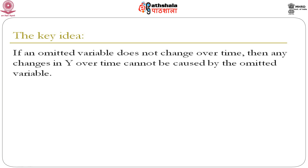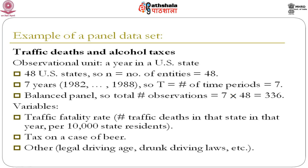Consider an example on traffic deaths and alcohol taxes. The observational unit is a year in a US state. Suppose you have 48 US states and data from 1982 to 1988 — 7 years of observation. This is a balanced panel giving 7 × 48 = 336 total observations. The dependent variable is the traffic fatality rate — the number of traffic deaths per 10,000 state residents. The key explanatory variable is the tax on beer.